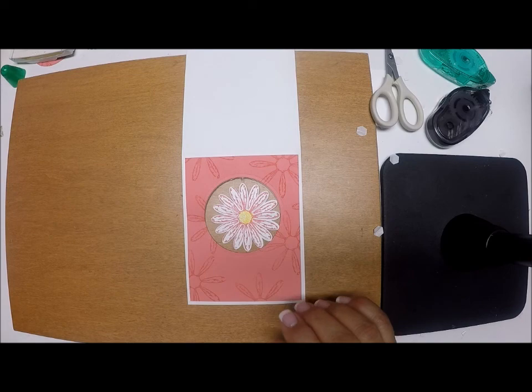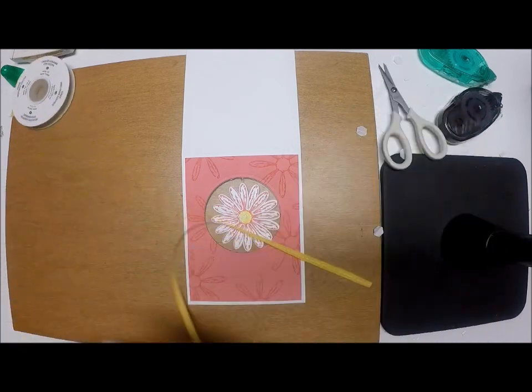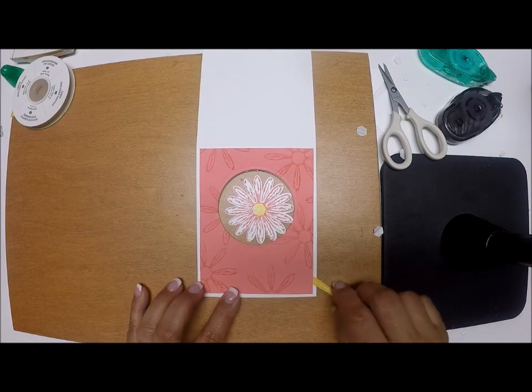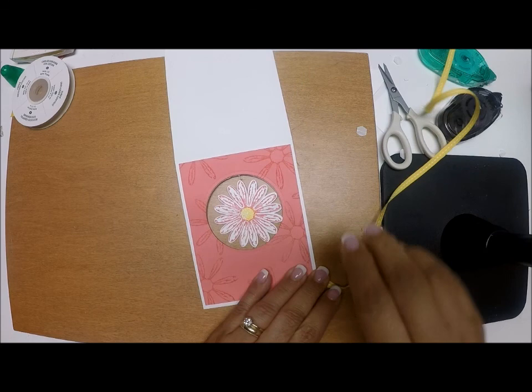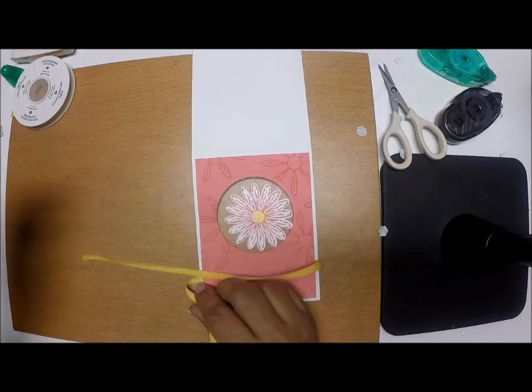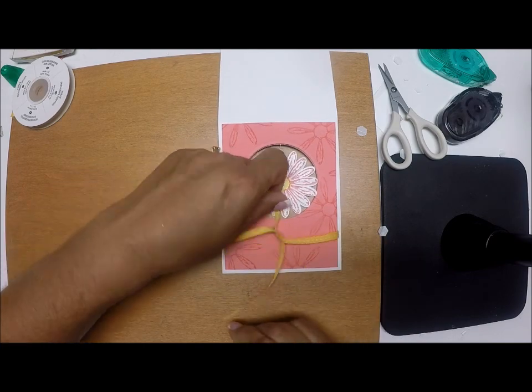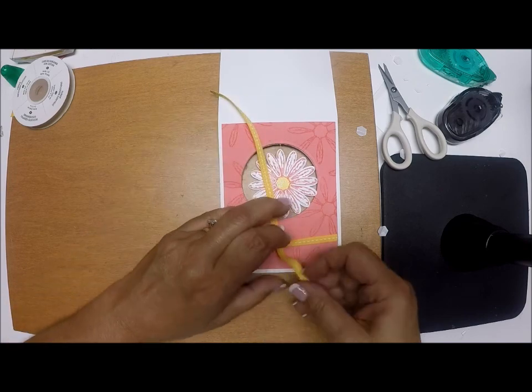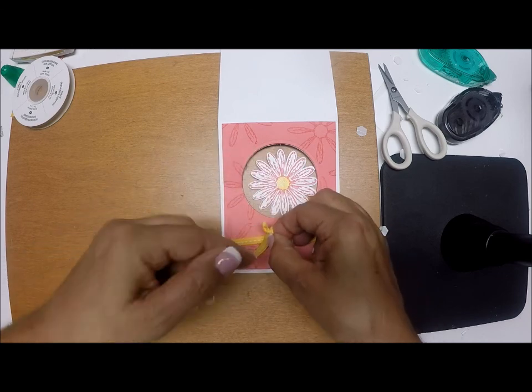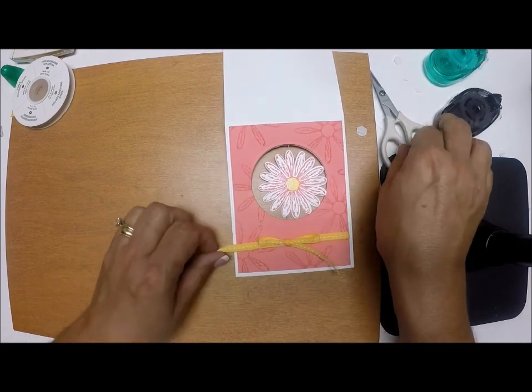Now I probably should have put my ribbon in first, but I think I can make this work. I'm just going to run it through. I probably should have made my bow before I attach this, but because I use the Dimensionals, it's just going to scooch it right out the other end. Not the best way to do it, but hey, there's a little bit of a workaround, right? So we're going to center this up, make sure it's even, and we'll tie it pretty well.